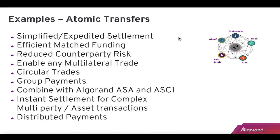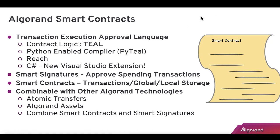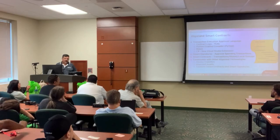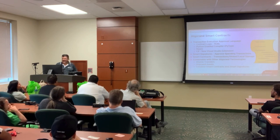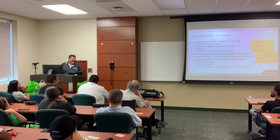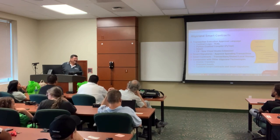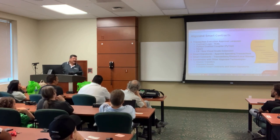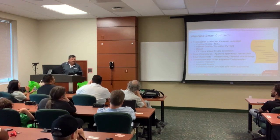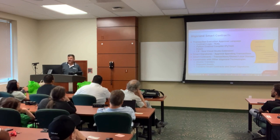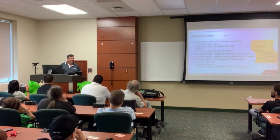Transaction Execution Approval Language — TEAL — is at the base of all smart contracts. TEAL is assembly language. It's got to be efficient, lean, mean, and fast on a blockchain — it has to be performant. The good news is there are tools that generate TEAL for you, so you don't have to learn assembler. One of them is PyTeal — a Python-enabled compiler. You create your contract in Python and a compile method generates the TEAL.